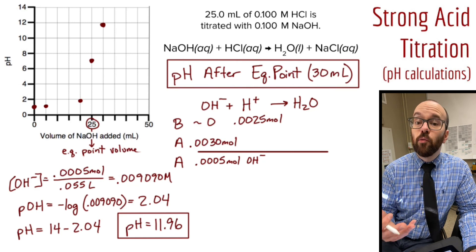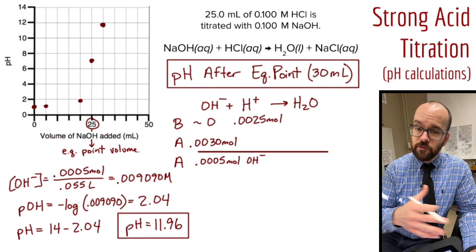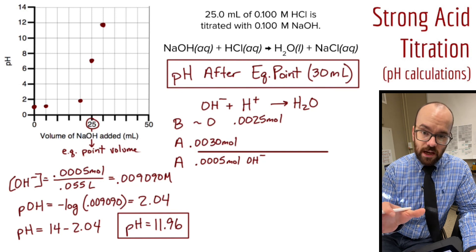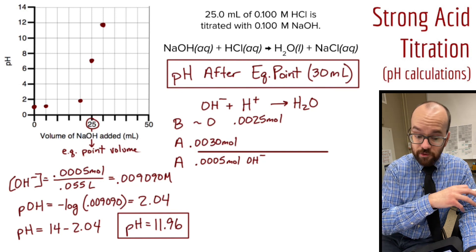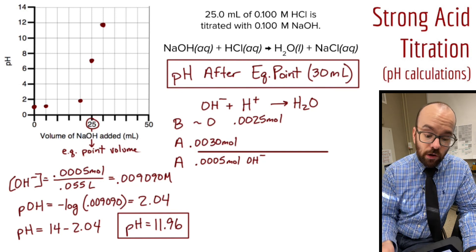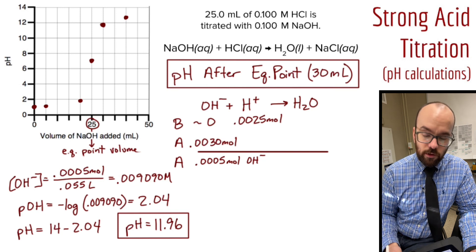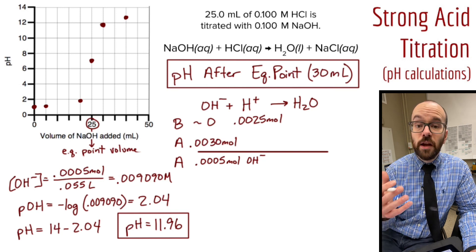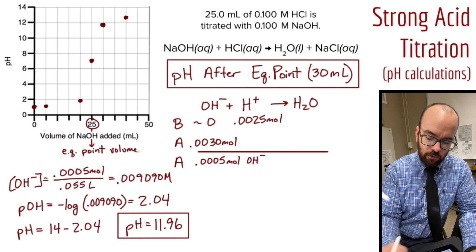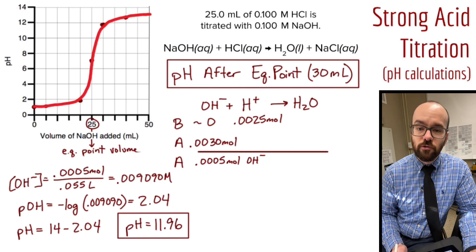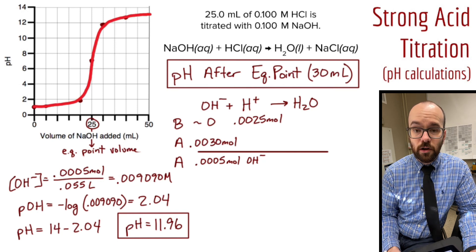I want one more data point for the graph. Working it out off-screen, at 40 milliliters we have a pH of just under 13. You can see on our graph that S-shaped curve that we get with titrations — I can draw the line to show the complete titration curve.